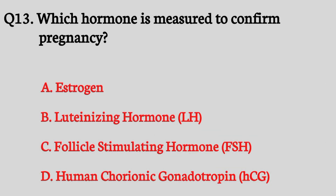Question number thirteen. Which hormone is measured to confirm pregnancy? The right answer is option D: Human Chorionic Gonadotropin, HCG.